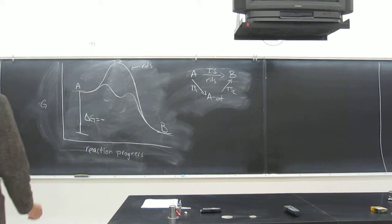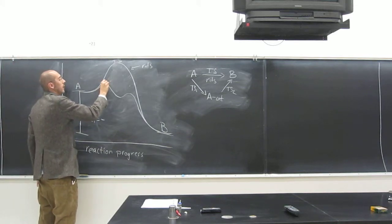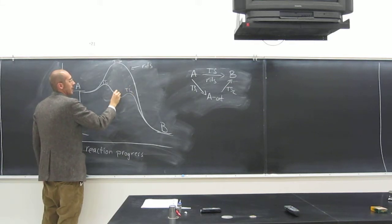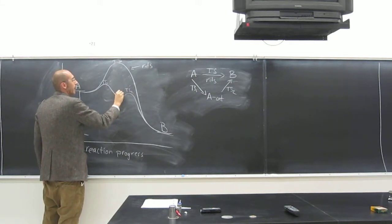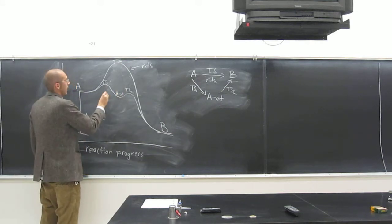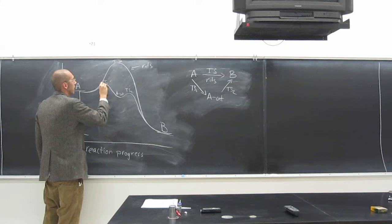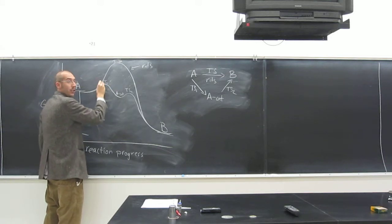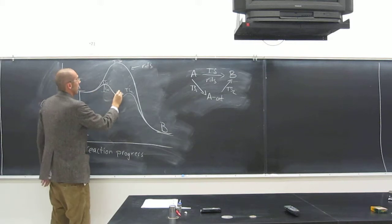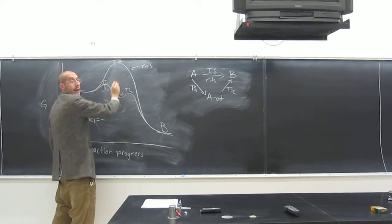So here, now we've got TS1, TS2. This is the A-catalyst complex. And here is the lower activation energy, EA1. Notice that's much lower than that, right?